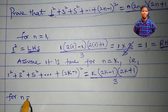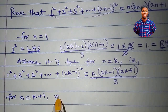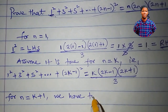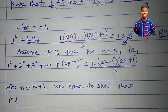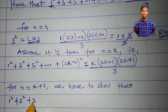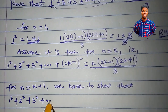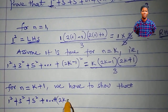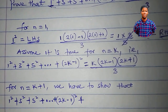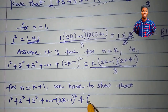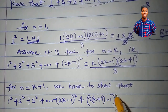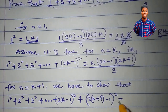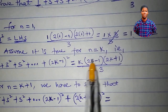For n equal to k plus 1, we have to show that 1 squared plus 3 squared plus 5 squared plus (2k minus 1) squared plus — to get the next term, in place of k I write k plus 1, that is (2(k+1) minus 1) — squared.